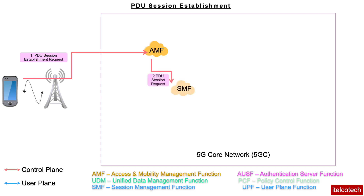Next is the selection of the SMF. The PDU session request from the UE is sent to the SMF — the Session Management Function — through the AMF. The AMF passes on all information provided by the UE, such as the user identifier, the slice information, the PDU session ID, and also the AMF ID itself.